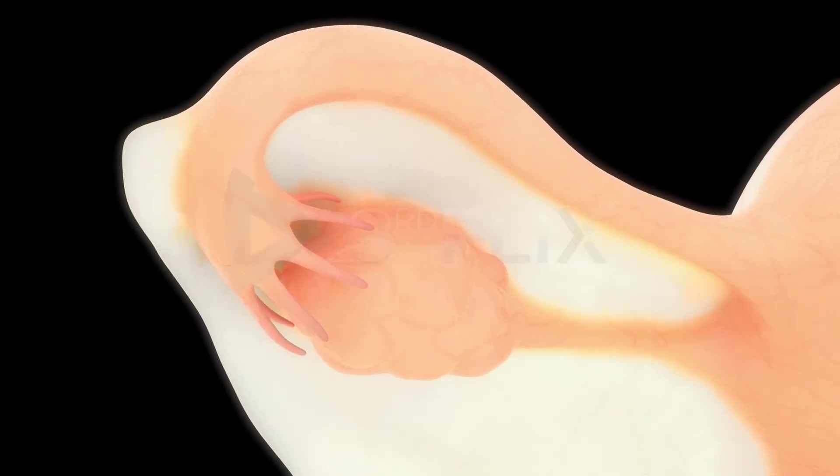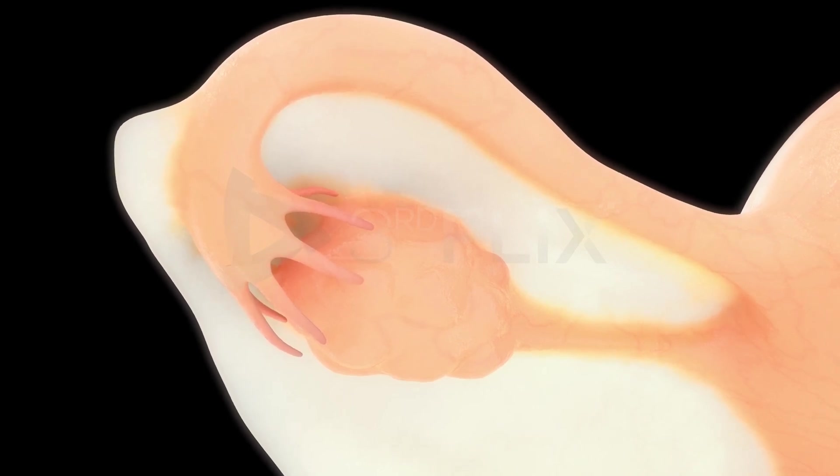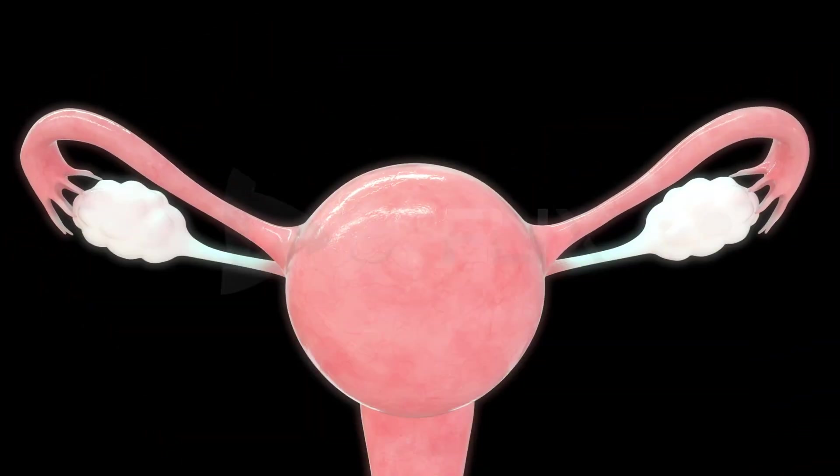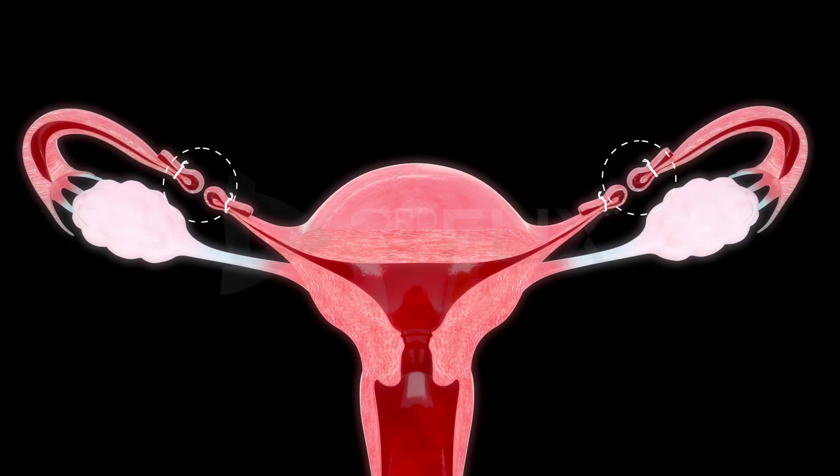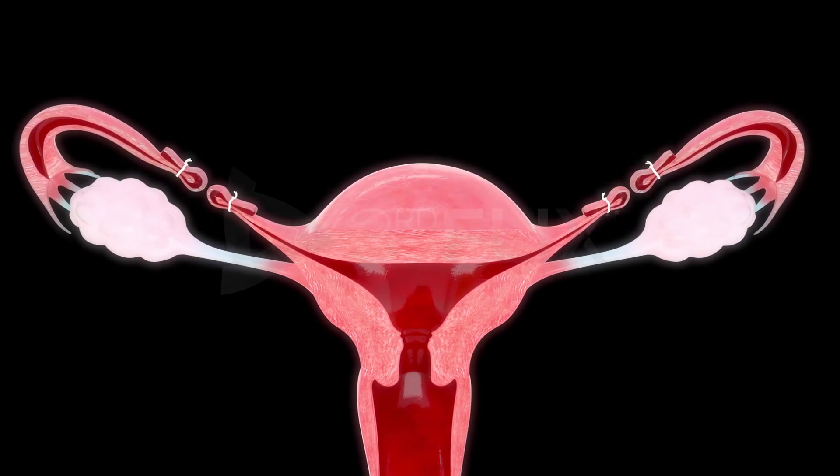The fallopian tube is attached to the abdominal wall by the peritoneal fold called the mesosalpinx. Tubectomy or tubal ligation is the surgical ligation of the fallopian tubes and is a permanent method of contraception.